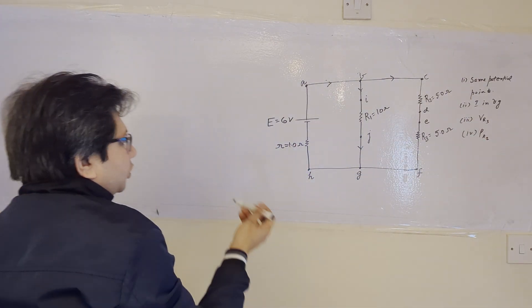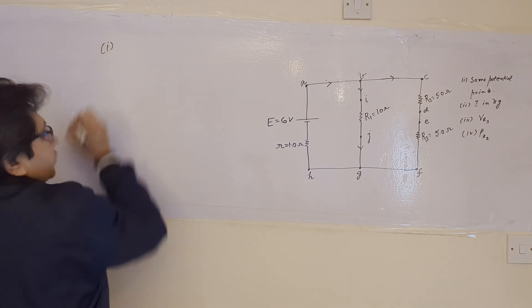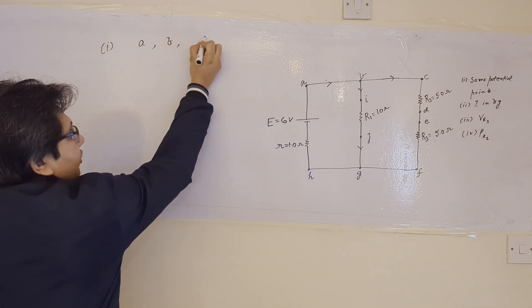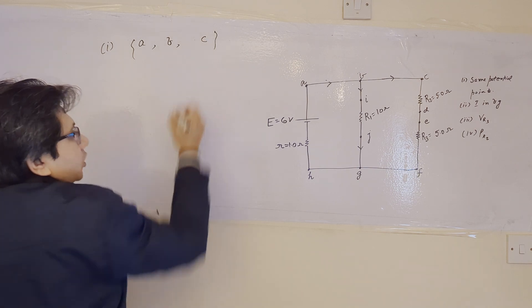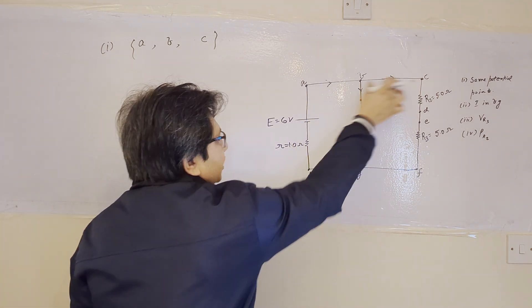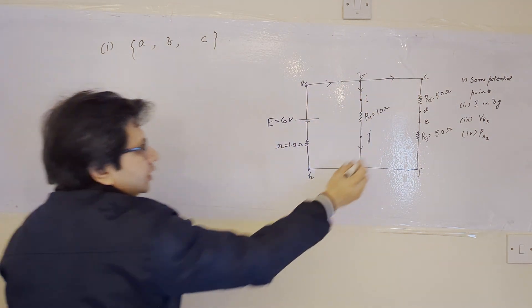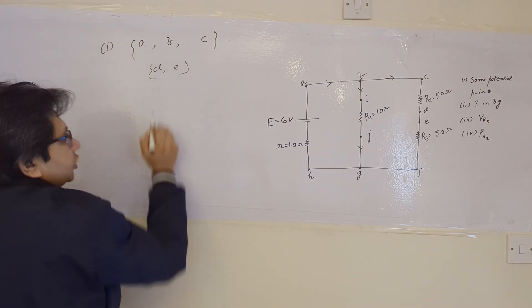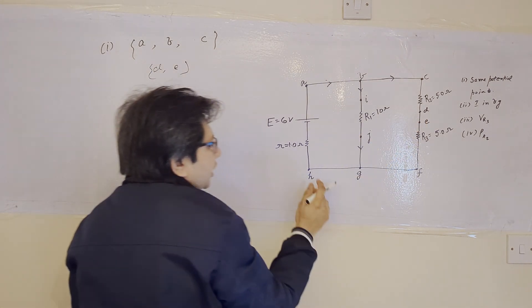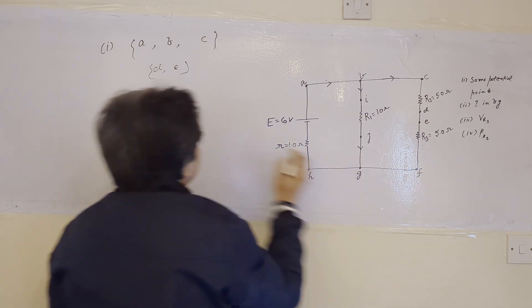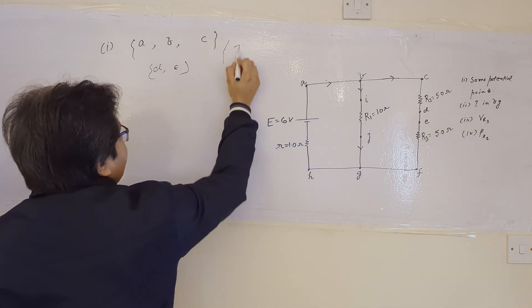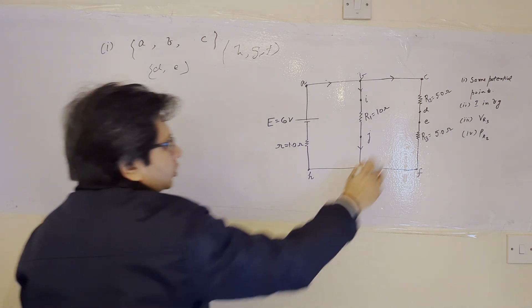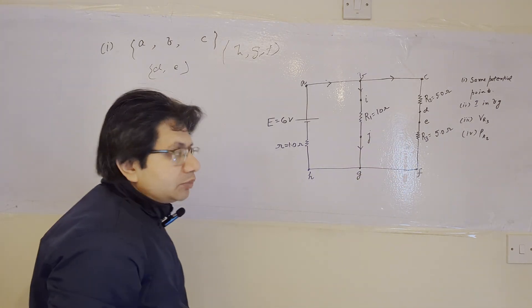The answer to the first part: the points having the same potential are A, B, C — the first group, because there is no resistance between them. Similarly, D and E form a combination because there is no resistance. And H, G, and F are also at the same potential. This is the answer to Part A.